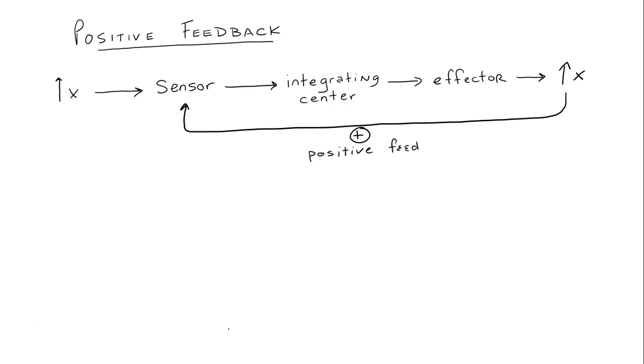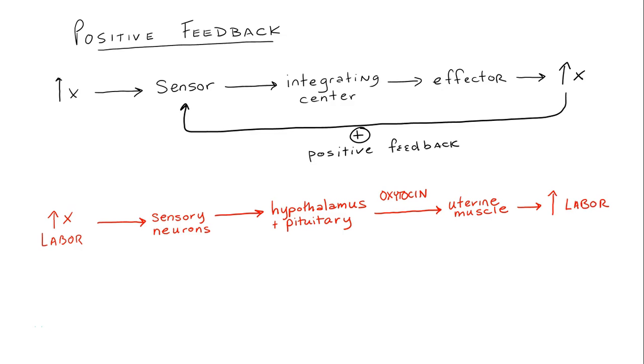During labor, uterine stretch receptors are going to trigger sensory neurons to stimulate the hypothalamus and pituitary to send out the hormone oxytocin. Oxytocin triggers uterine muscle contractions, which act by positive feedback to trigger the release of even more oxytocin. Positive feedback does not lead to homeostasis, and ultimately the baby is born, and this shuts off the system.